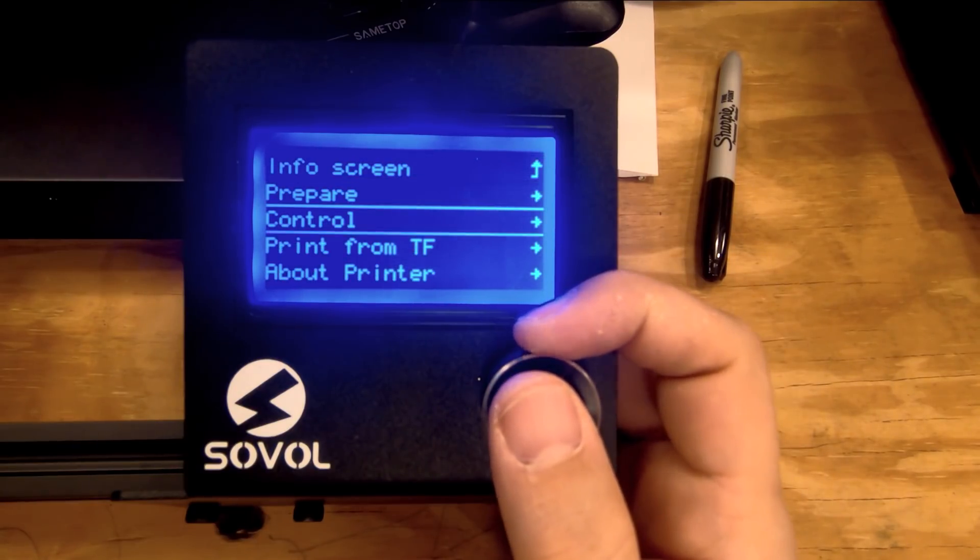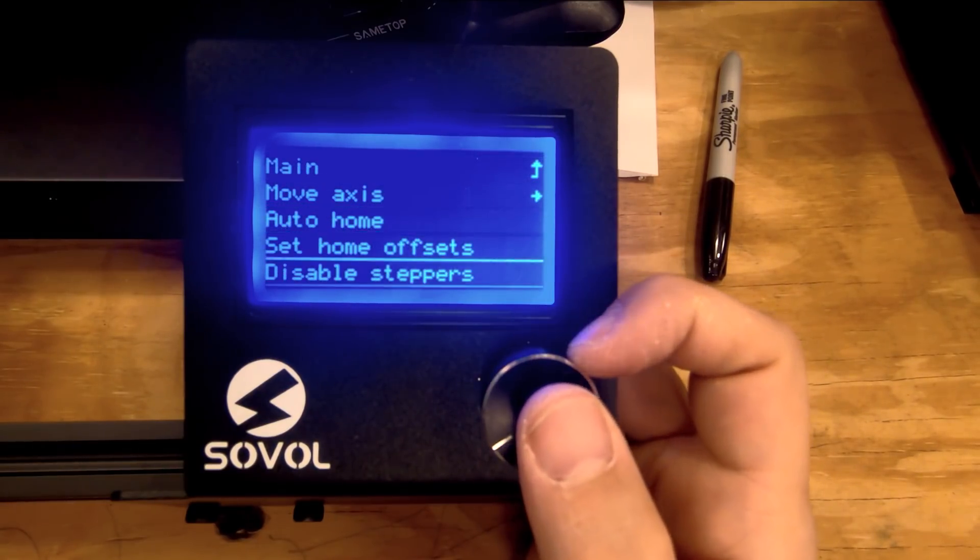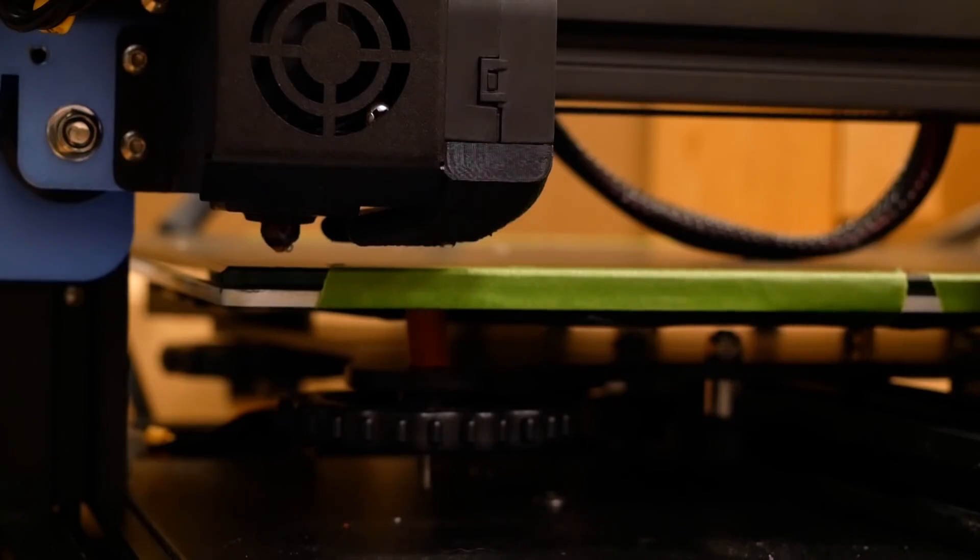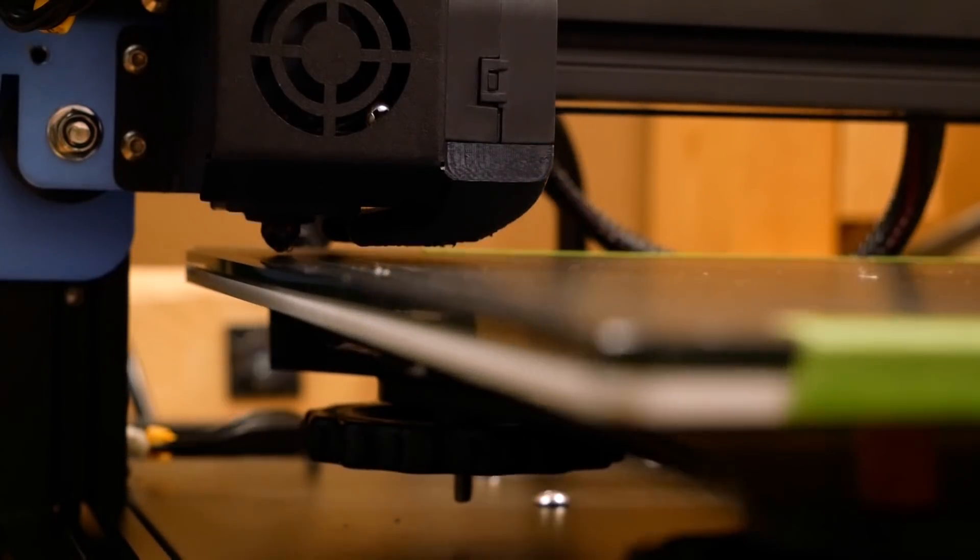In order to move the bed, you can go to Prepare, Disable Steppers, and that'll allow you to easily move the bed with your hands.